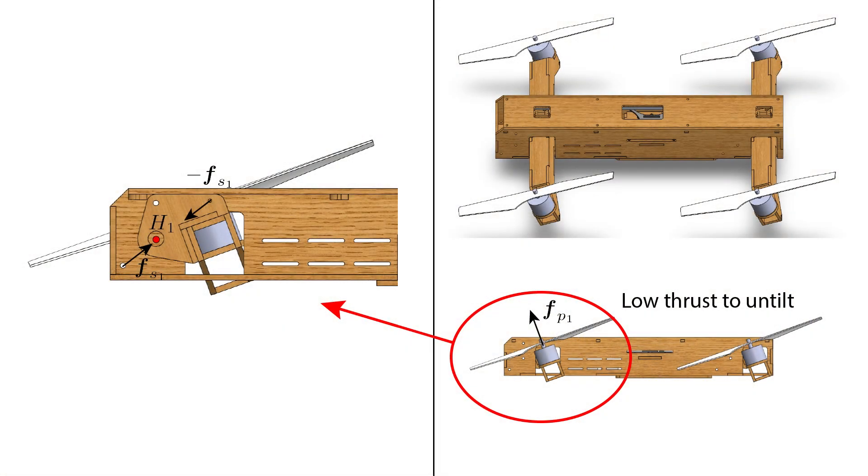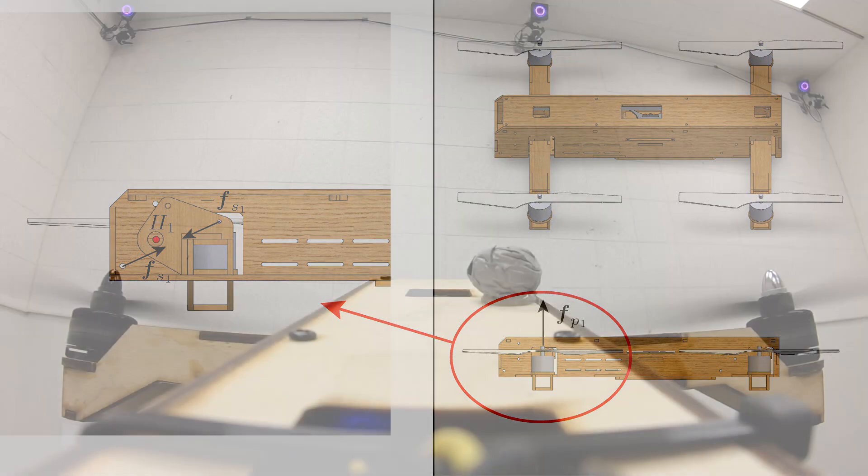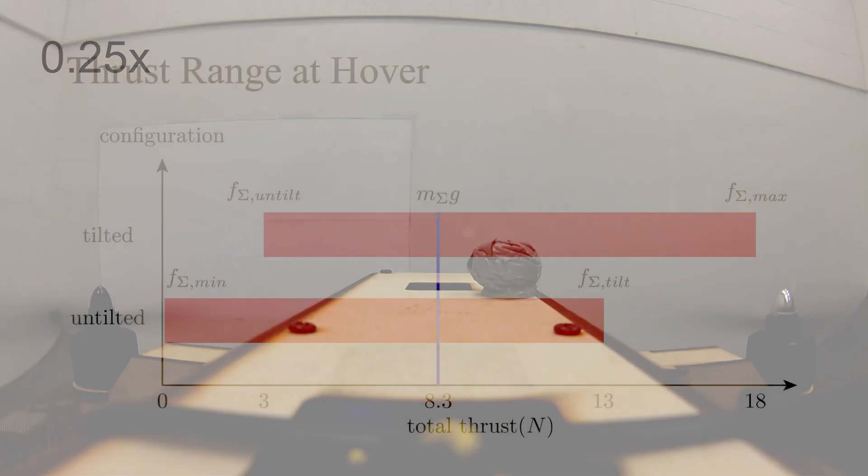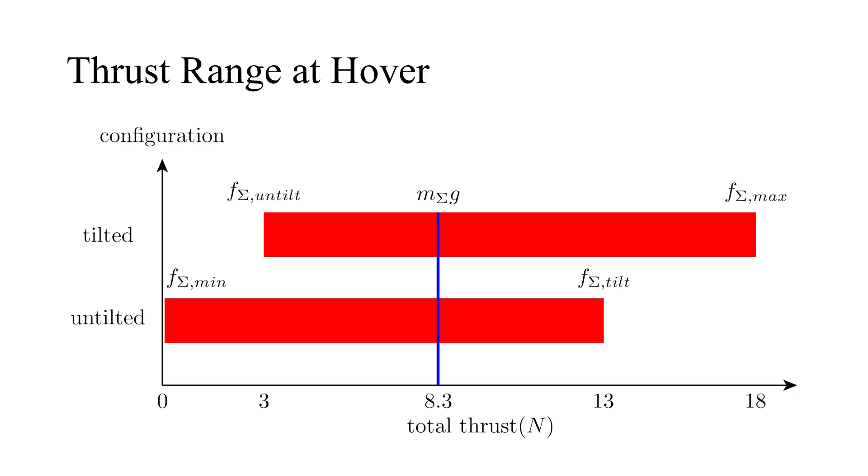Once in the tilted configuration, when propeller thrust drops below the spring force, the vehicle transitions back to the untilted configuration. The thrust to untilt the propellers is lower than the thrust to tilt them. This ensures that in each configuration, the range of thrust in which the vehicle can operate is wide.